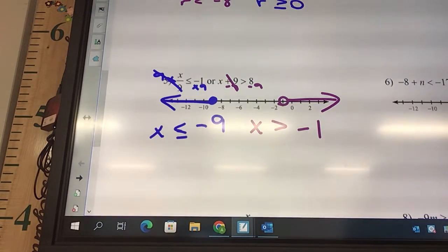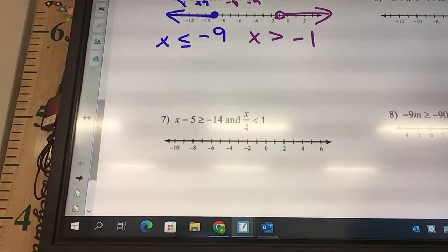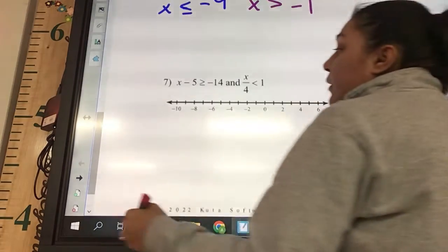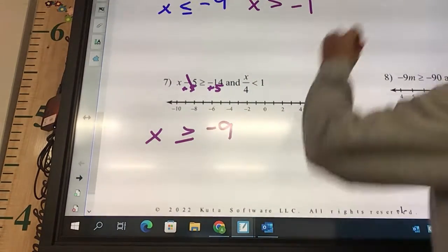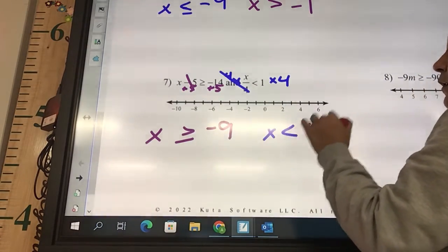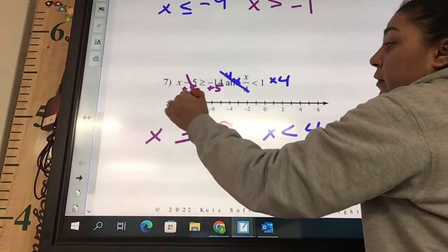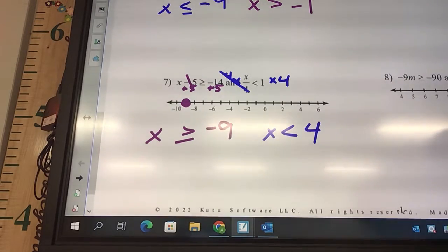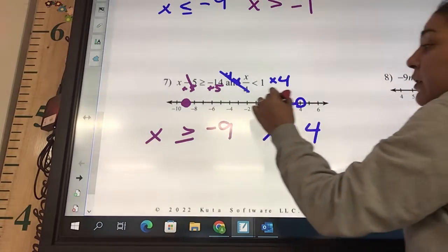Number 7. Is it an and or an or? An and. So what should it look like? They should be connected. Ands go in towards each other. For the first equation, x-5≥-14, how do I solve for x? Plus 5. What is negative 14 plus 5? Negative 9. And then the other equation, x/4<1. How do I solve for that? Times 4. On the negative 9, is that going to be open or closed? Closed. Going which way? Is this an and or an or? It's an and. So we know that they should both be pointed in towards each other. So just do the other dot, which is at 4. And it's going to be open. And then you can connect the two dots together.